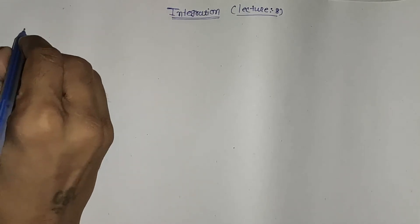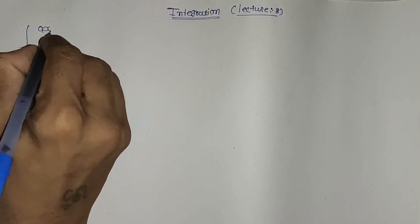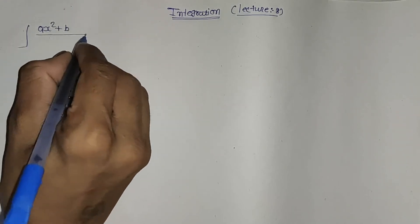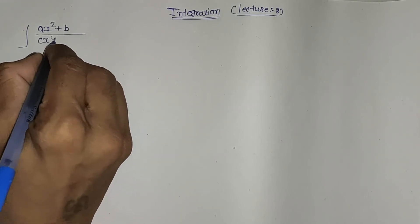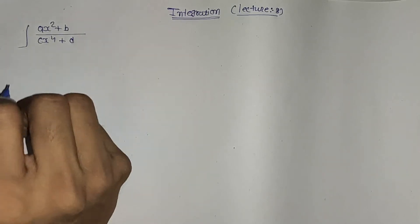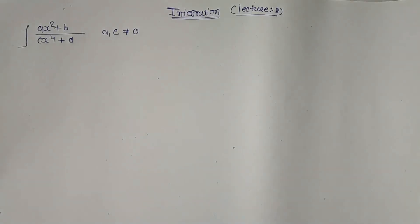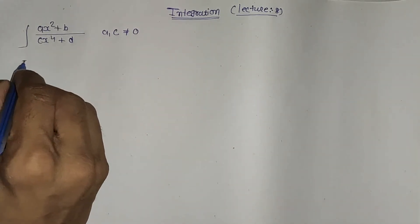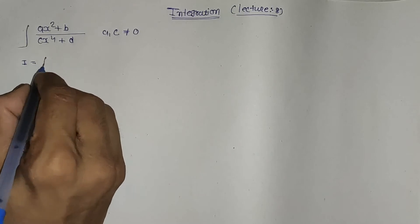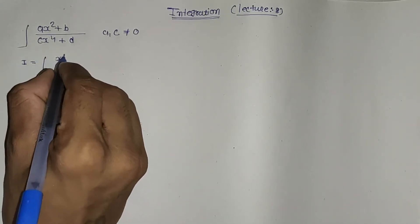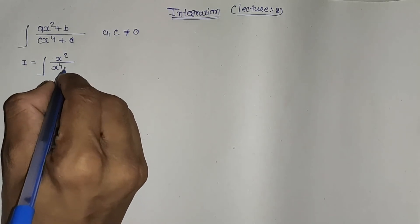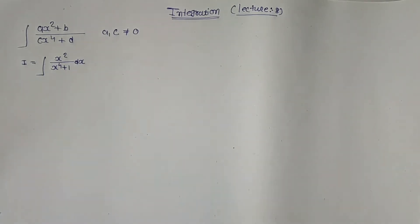Integration Lecture 8. If the integral is in the form of (ax² + b) divided by (cx⁴ + d) type, where a and c are not equal to 0, then we have to use some special arrangement. Let's see an example: I equal to integration of x² divided by (x⁴ + 1) dx.